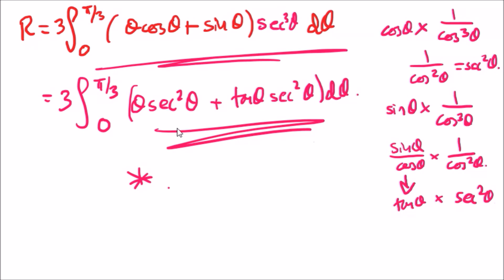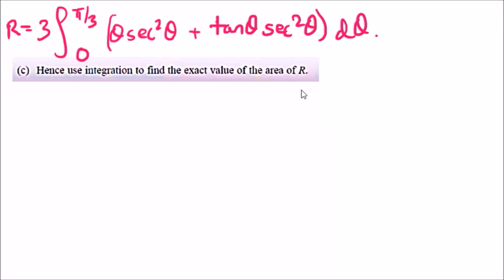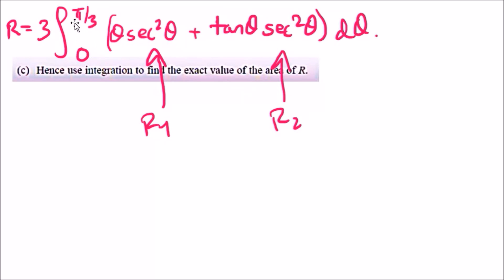That concludes Part B — λ is the constant 3, and α and β are the limits 0 and π/3. Now for Part C, we need to use integration to find the exact area. My advice is to split this into two separate integrals: R1 for the integral of θ sec²θ, and R2 for the integral of tanθ sec²θ. We'll then add them and multiply by 3.